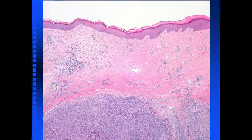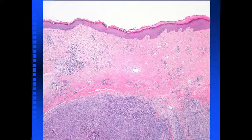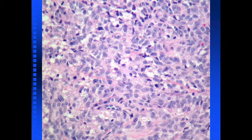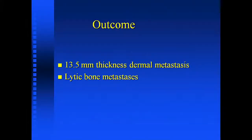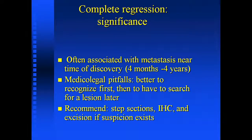So this is what happened in that patient. I said I thought it was a regressed lesion, and the surgeon who did the initial biopsy disagreed. But several months later, the patient presented with a huge dermal nodule composed of atypical epithelioid cells and spindle cells in a fascicular and alveolar pattern. The patient also had a bone marrow aspirate which showed atypical epithelioid-like cells. The patient had 13.5-millimeter thickness, dermal metastases, and lytic bone metastases.